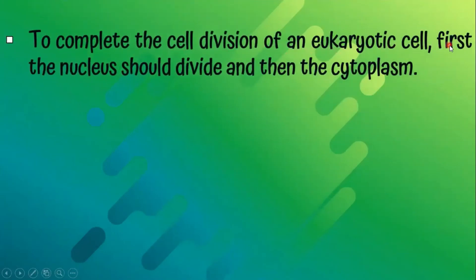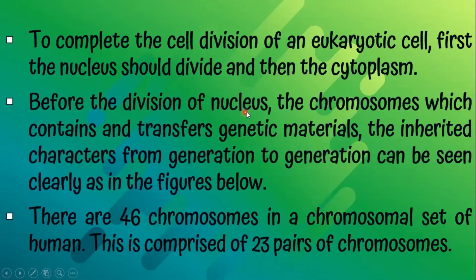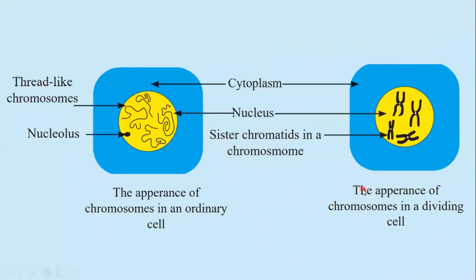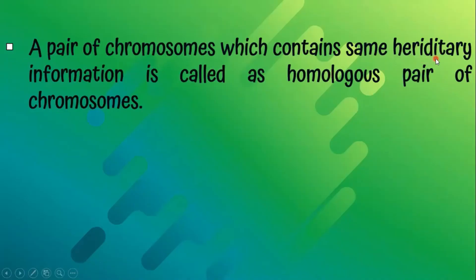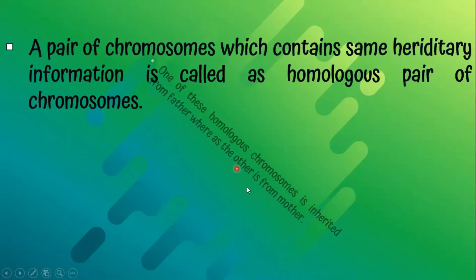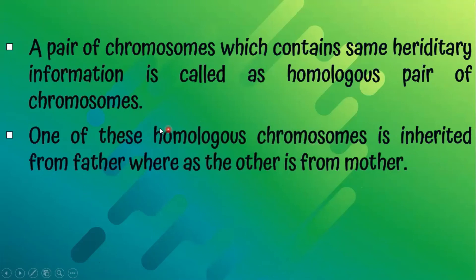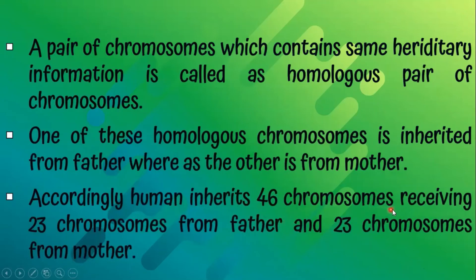To complete the cell division of a eukaryotic cell, first the nucleus should divide and then the cytoplasm should divide. Before the division of the nucleus, the chromosomes — which contain and transfer genetic materials and inherited characters from generation to generation — can be seen clearly. There are 46 chromosomes in the chromosomal set of humans, comprised of 23 pairs. A pair of chromosomes containing the same inherited information is called a homologous pair. One of these homologous chromosomes is inherited from the father and the other from the mother. Accordingly, humans inherit 46 chromosomes — 23 from the father and 23 from the mother.